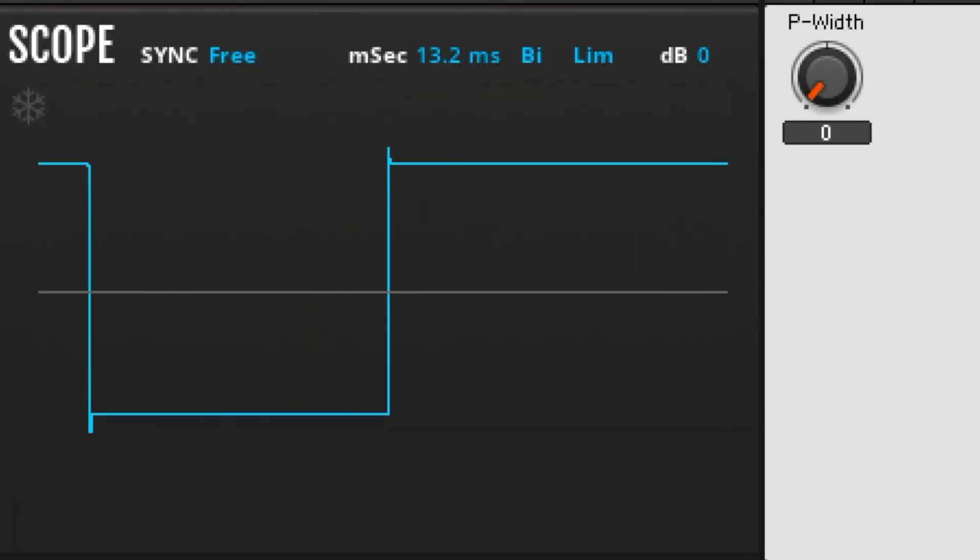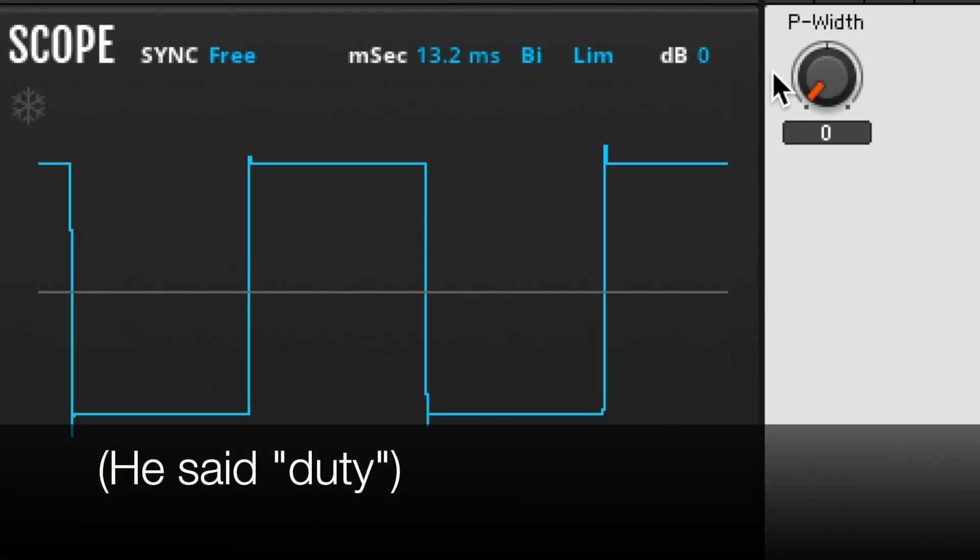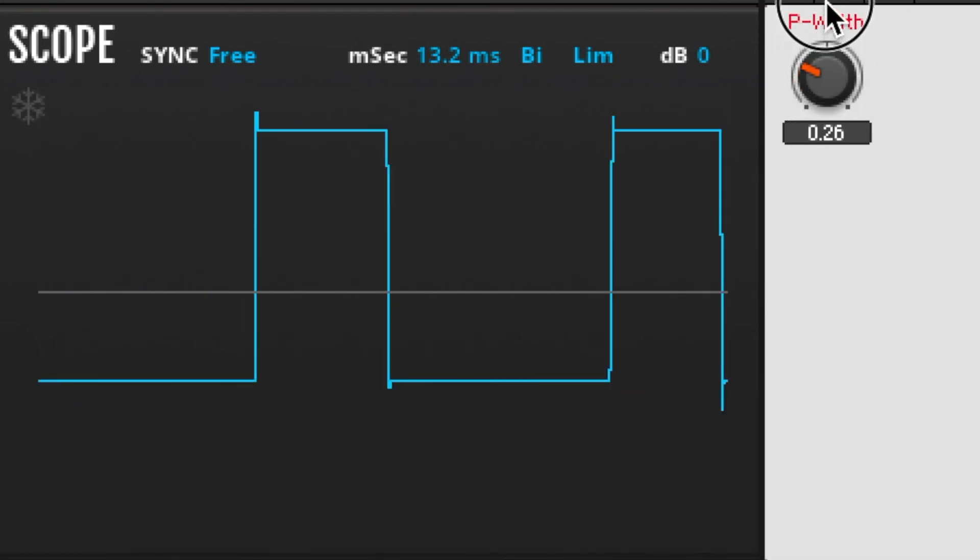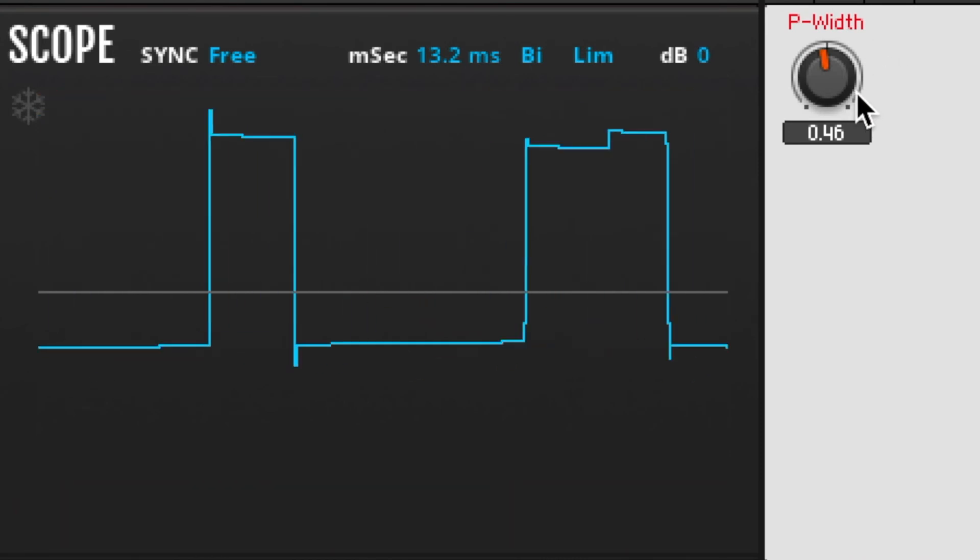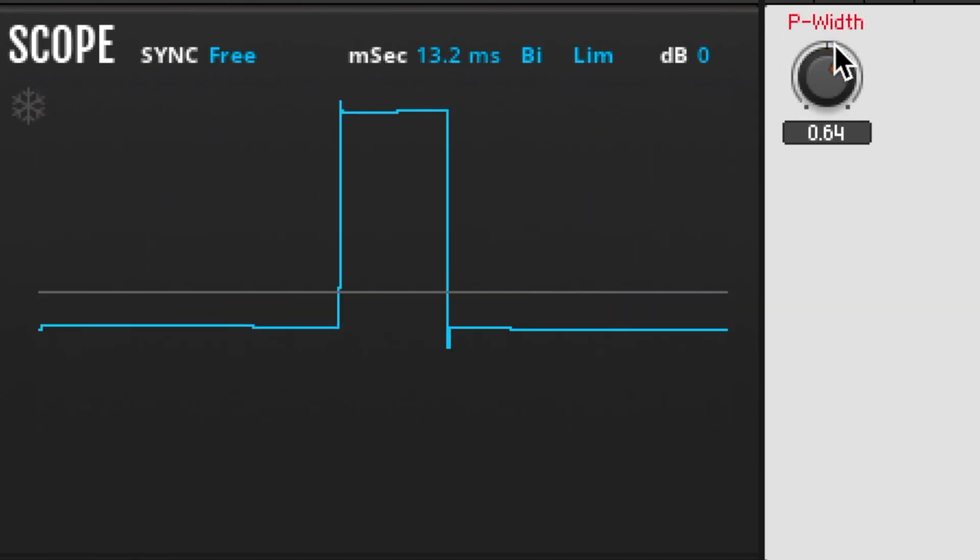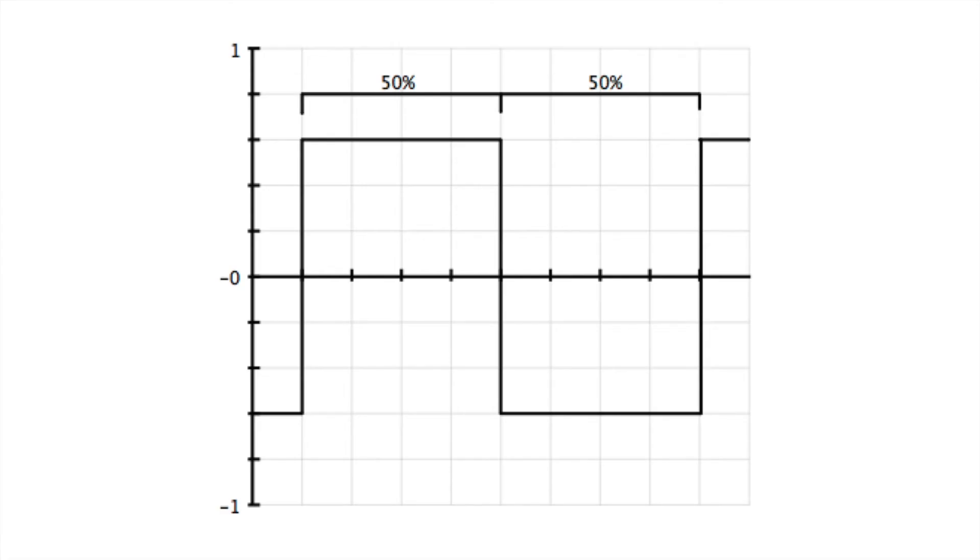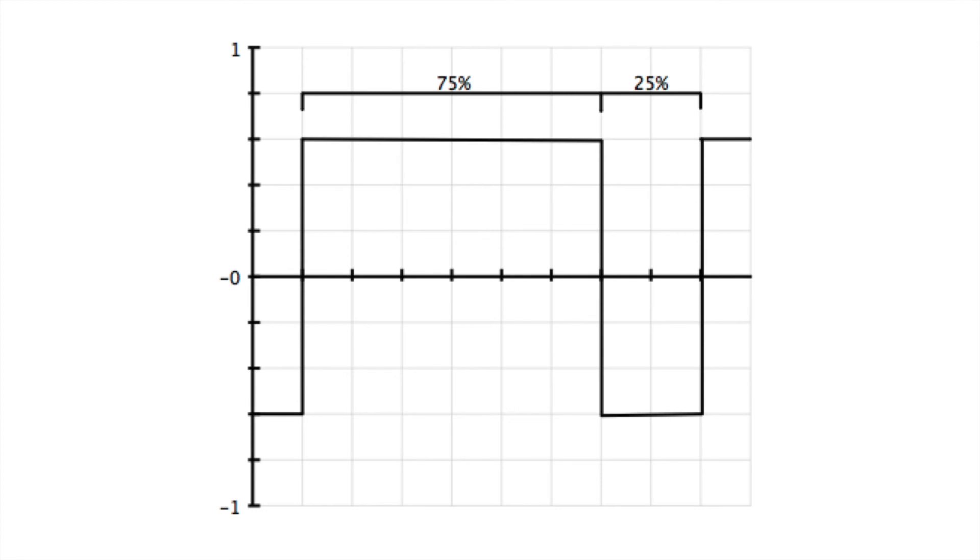As we said, square waves are a type of rectangle wave. Rectangle waves have a property called their duty cycle, or pulse width. This is the percent of the waveform that is above the zero axis. So, in a square wave, half of the waveform is above the axis, half of the waveform is below. But in other kinds of rectangle waves, these might have different ratios.